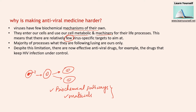Despite this limitation, there are now effective antiviral drugs — for example, drugs that keep HIV infection under control. Scientists have succeeded in making antiviral drugs, but it is a lot harder compared to making antibiotic drugs because we have very few biochemical pathways we can target to kill the virus and keep their count low.